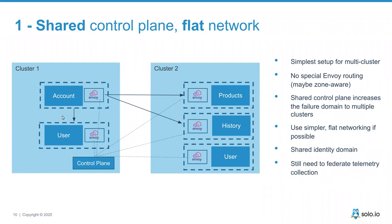When building a mesh across multiple clusters, one pattern is to assume a flat network where everything is addressable between clusters and services talk directly. However, this merges the fault planes — if you're sharing a control plane and one goes down, both clusters effectively go down. You're not getting the isolation you might be looking for, but it is a step toward utilizing compute across two different clusters.